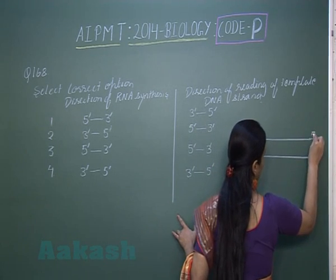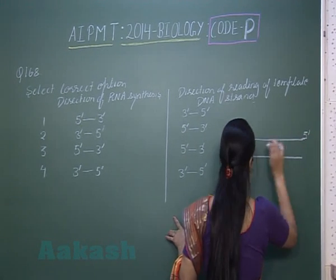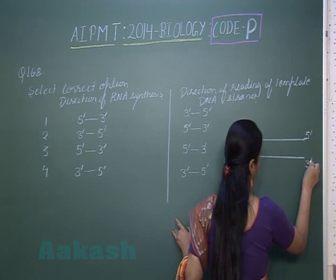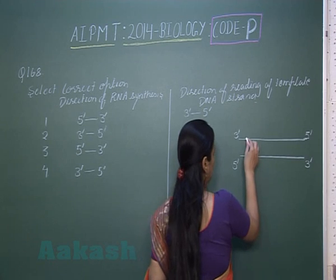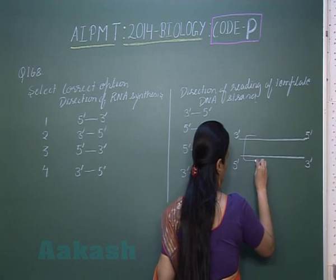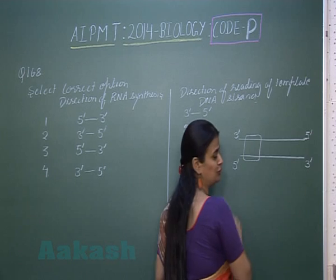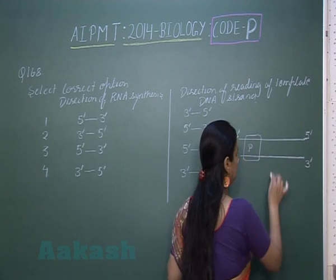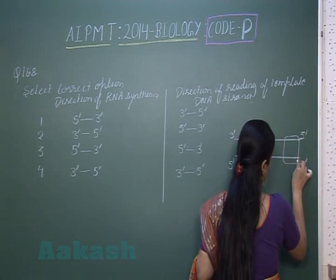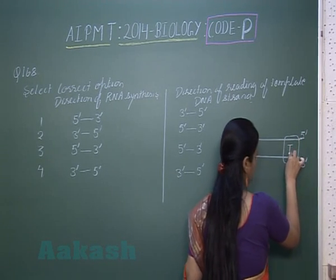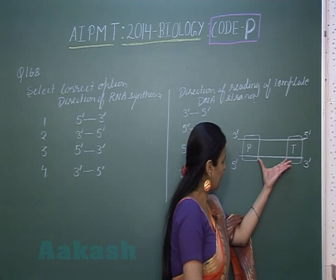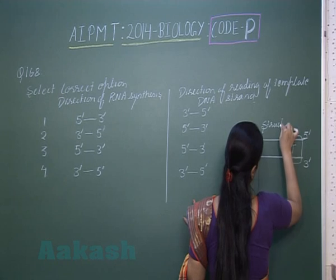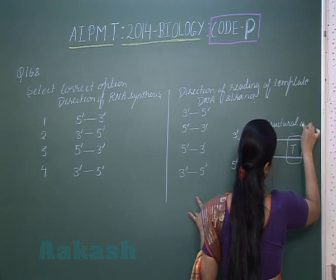On one DNA strand, this end is 3' and this end is 5'. On the complementary strand, this end is 5' and this end is 3'. The region on the transcription unit near the 3' end represents the promoter, and the region at the other end represents the terminator. The region in between is called the structural gene.